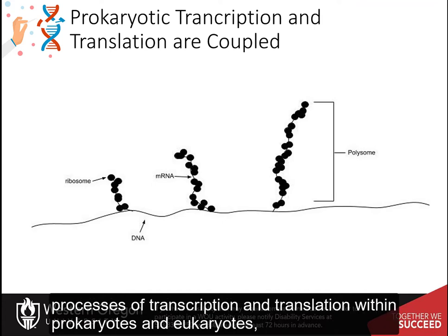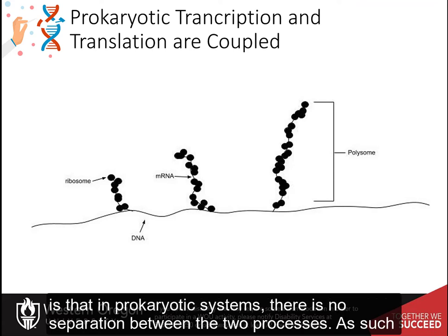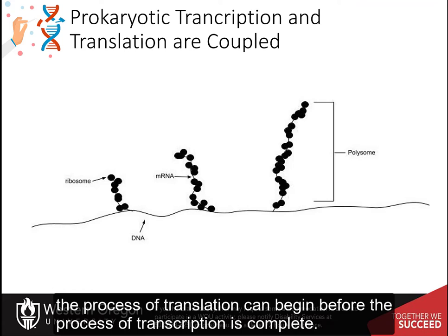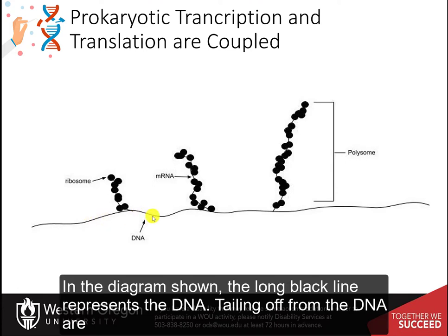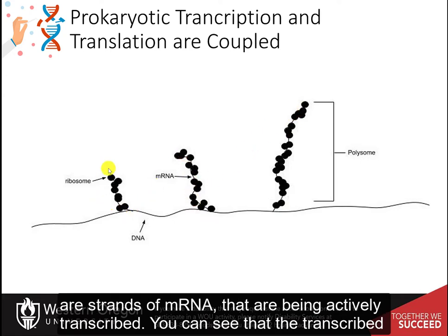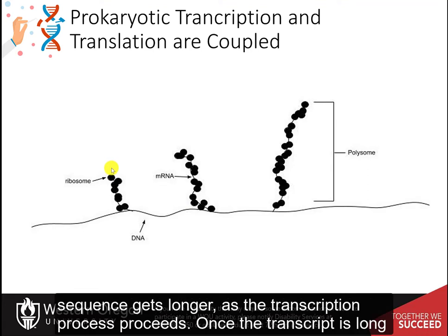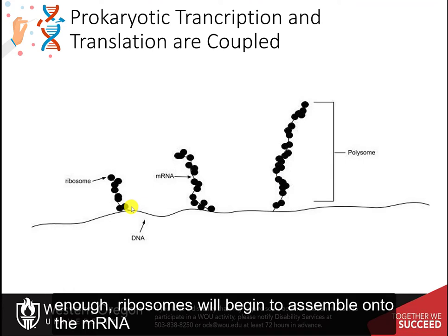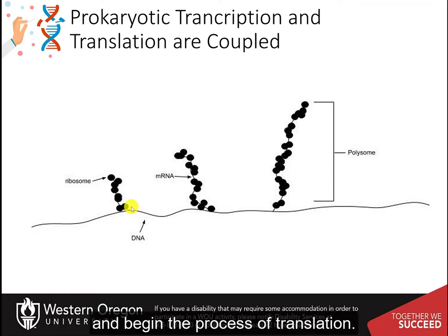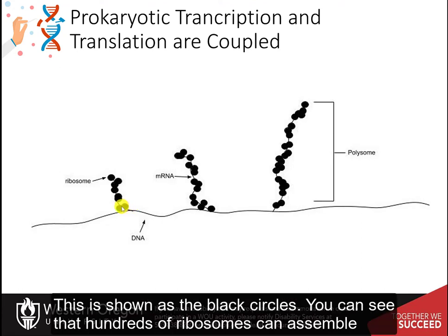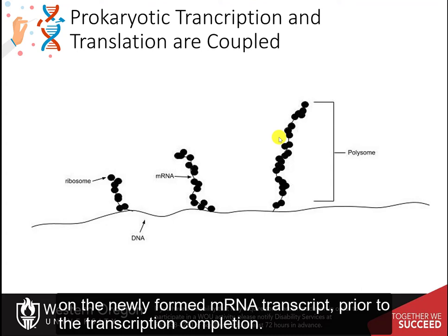Another major difference between transcription and translation in prokaryotes versus eukaryotes is that in prokaryotic systems there is no separation between the two processes. As such, translation can begin before transcription is complete. In the diagram shown, the long black line represents the DNA. Tailing off from the DNA are strands of messenger RNA being actively transcribed. You can see that the transcribed sequence gets longer as transcription proceeds. Once the transcript is long enough, ribosomes begin to assemble onto the messenger RNA and begin translation. This is shown as the black circles, and hundreds of ribosomes can assemble on the newly formed messenger RNA transcript prior to transcription completion.